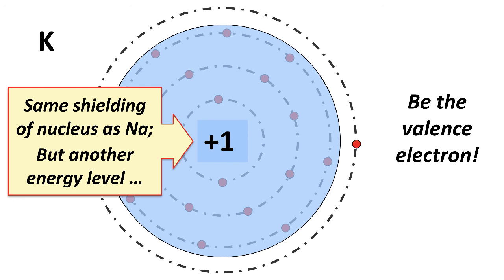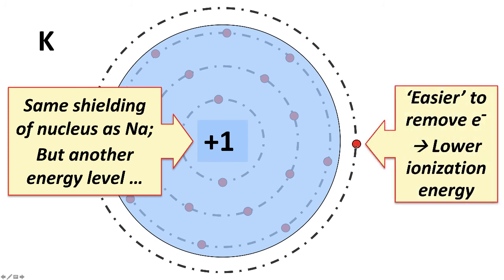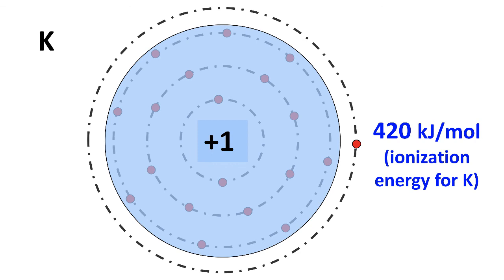What ends up happening then is because we have another energy level, although the effective nuclear charge is the same as in sodium, we have a farther out electron. If it's farther away, it feels less of a charge, making it easier to remove the electron and giving a lower ionization energy. This is again by comparison to sodium. So we would predict a lower ionization energy. And in fact, we do get 420 kilojoules per mole, which is less than the 490 kilojoules per mole for sodium.